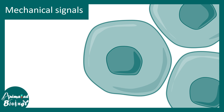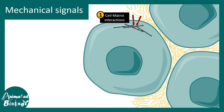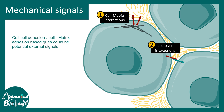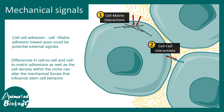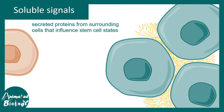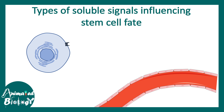There could be mechanical signals, which are extrinsic signals telling a stem cell to differentiate into lineages. There could be cell-matrix interactions — interaction between integrins and the extracellular matrix. There could also be cell-cell interactions via several kinds of signaling pathways. All these can possibly dictate the fate of the stem cell. Not only cell-cell contact-based signals, but also soluble signals coming from a distance can dictate the fate of these stem cells.